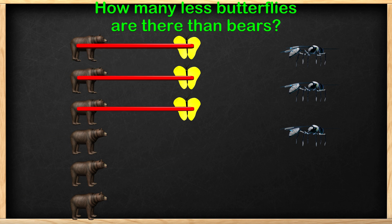We match them up and we notice there are three more bears than butterflies, but that also answers the question how many less butterflies? We have three less butterflies than bears. There are six bears and only three butterflies.